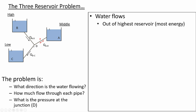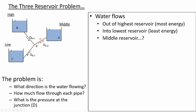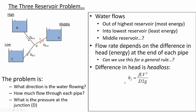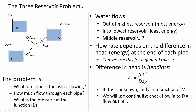We know water goes out of the highest reservoir into the lowest reservoir, but the middle reservoir we're not sure about. How much flow rate there will be depends on the driving force — the difference in head between the origin and the destination. We use the Darcy-Wiesbach equation to estimate head loss, but the velocity is unknown and the friction factor is a function of velocity. A big part of our process is using the continuity equation.